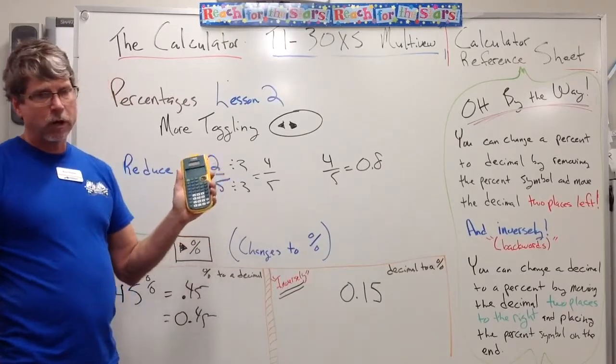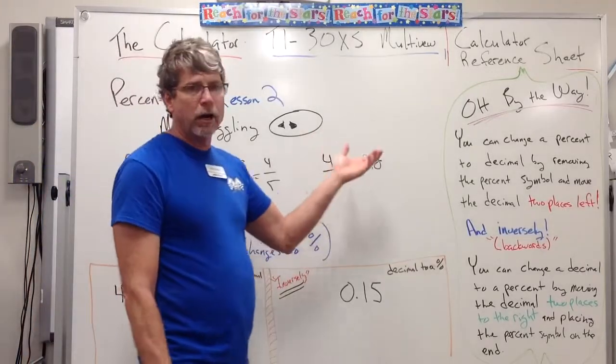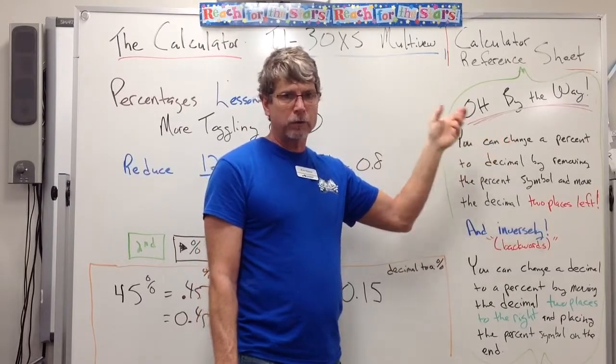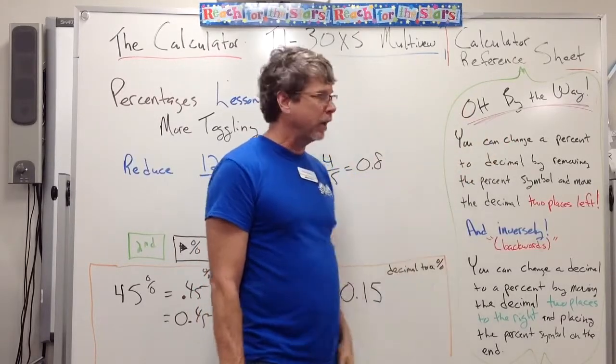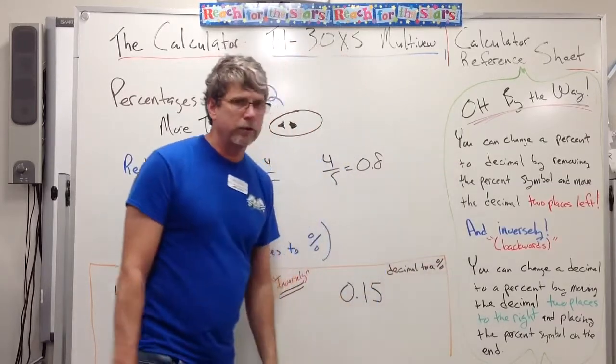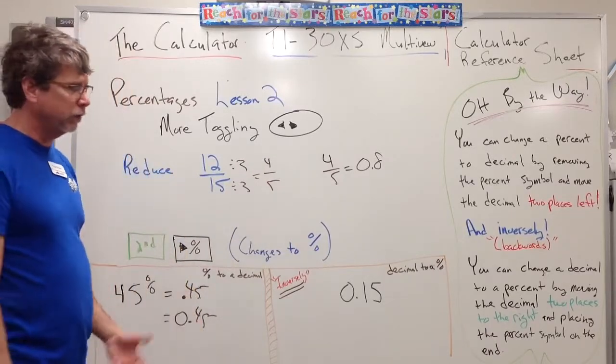It'll change it to 0.45 as well. But the shortcut is, since we're dividing by 100, each time you divide by 10, you lose place value, so you're going to slide the decimal two places to the left. We can apply that to percentages. So remove the percent symbol, slide the decimal two places to the left, and that's how you can easily change a percent to a decimal without using your calculator.